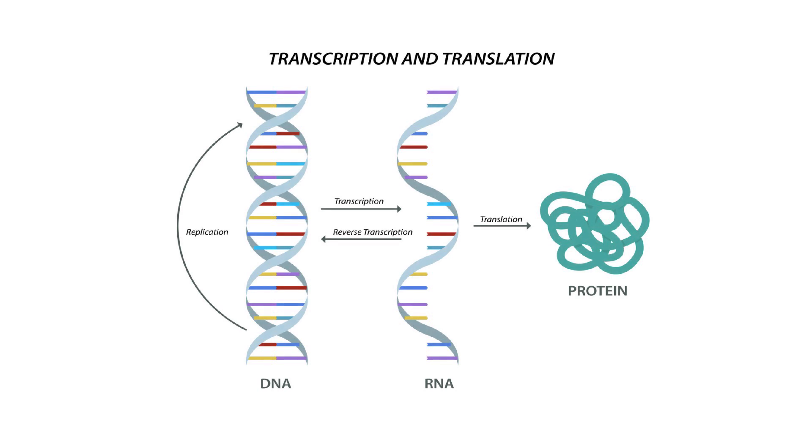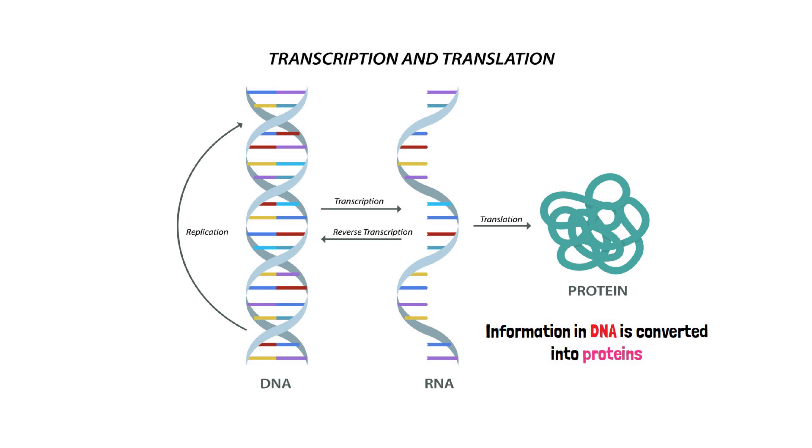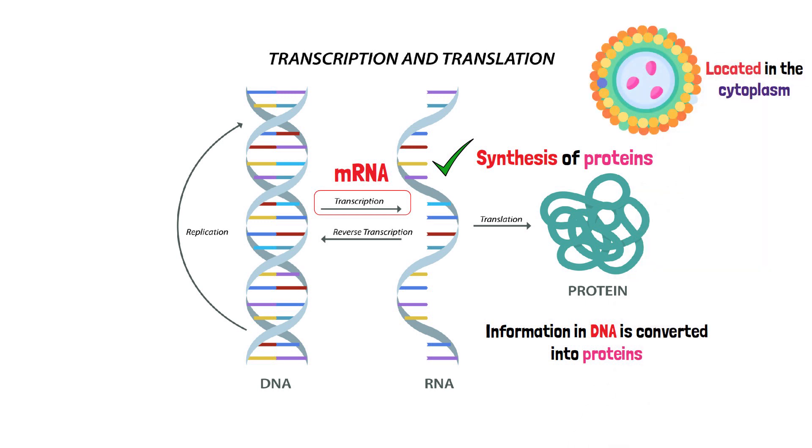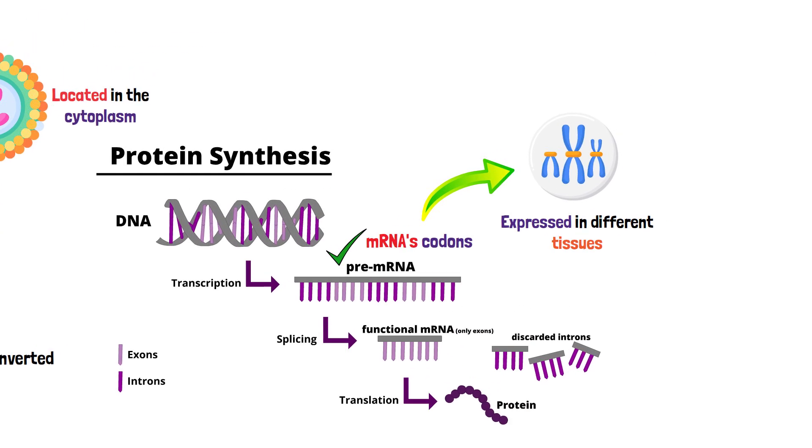The central dogma of molecular biology describes how the information in DNA is converted into proteins. During transcription in the nucleus, an enzyme called RNA polymerase crafts a strand of messenger RNA (mRNA) based on the DNA template. This mRNA then guides the synthesis of proteins during translation in the ribosomes, located in the cytoplasm. Here, transfer RNA (tRNA) molecules bring amino acids that correspond to the mRNA's codons, assembling them into a protein. This process is a fine example of how different genes are expressed in different tissues, explaining phenomena like the absence of hair on the tongue.